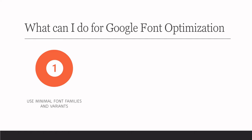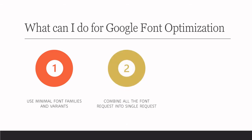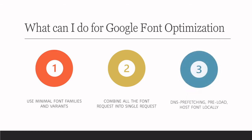Number two is to combine all font requests into a single request. For example, you can see seven to eight requests being made only for fonts — you could combine all those into a single request. This not only reduces the HTTP request count but also improves loading time. The third thing is to use DNS prefetching and pre-connect, and host Google Fonts locally. These all help to speed up the process. You can do all of this manually or by using a plugin.